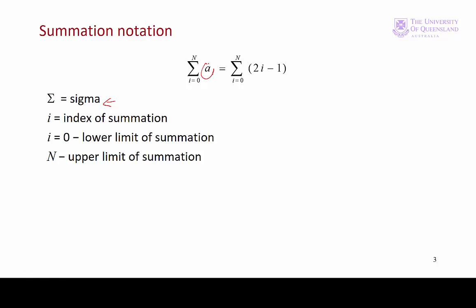The term to the right of the sigma, ai, or our little formula there, is the summand. And we have our index of summation, indicating the numbers we're summing over.